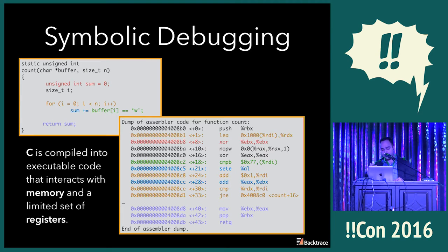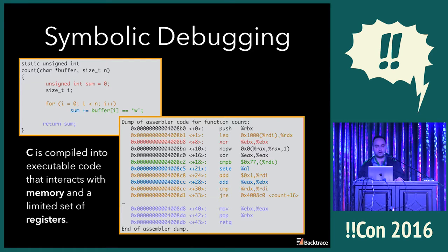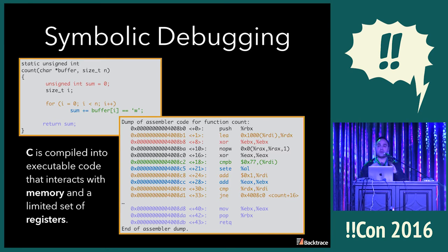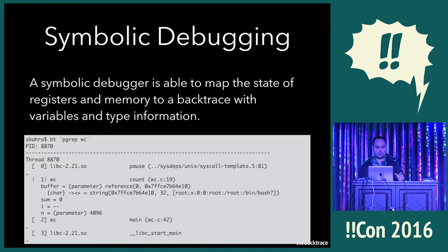The actual C code is compiled down to assembly. At assembly level you no longer have types — you're interacting with memory, or on x86 processors, a very limited set of registers, which are much faster than memory but very limited. A symbolic debugger is able to map this information back to types, variables, etc.